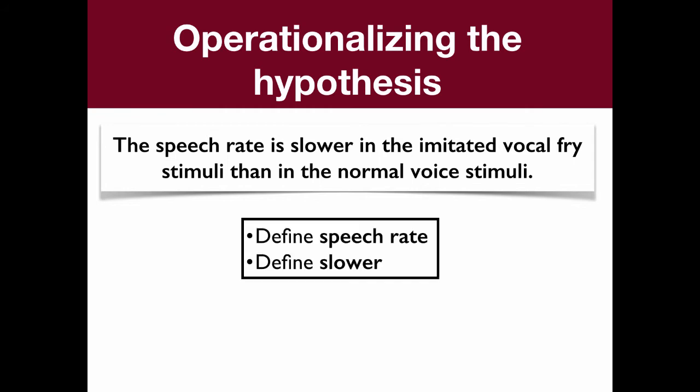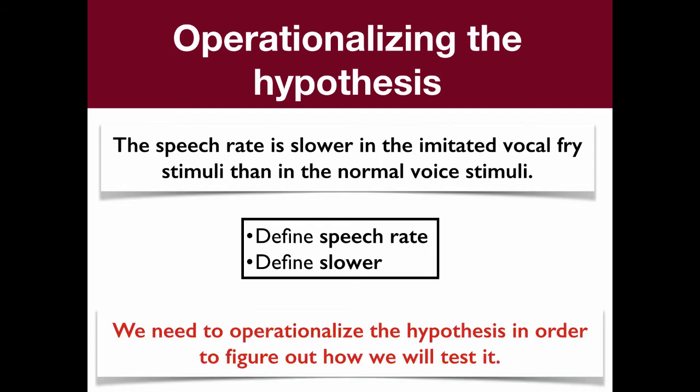We need to define what we mean by speech rate, and we need to define what we mean by slower. We're lucky that we don't need to define imitated vocal fry stimuli or normal voice stimuli, because those are already defined for us from the study. But if we were trying to figure out whether speech rate is slower in vocal fry compared to non-vocal fry stimuli, we would need to define what we meant by vocal fry versus non-vocal fry. So how do we define speech rate and how do we define slower? We need to decide how to operationalize the hypothesis in order to figure out how we're going to test it.